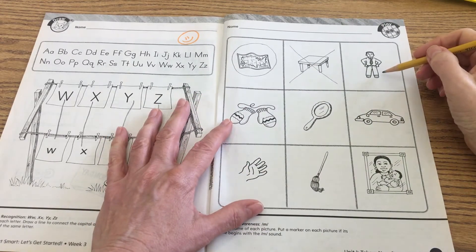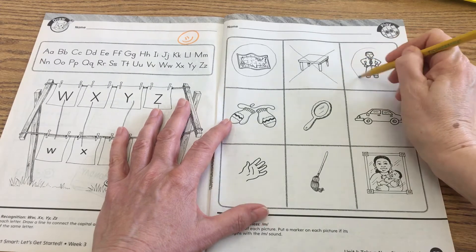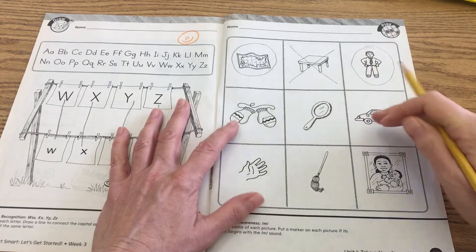Okay, this is a man. Echo man. Man. Monkey. Those both begin with mmm, so we can circle it.